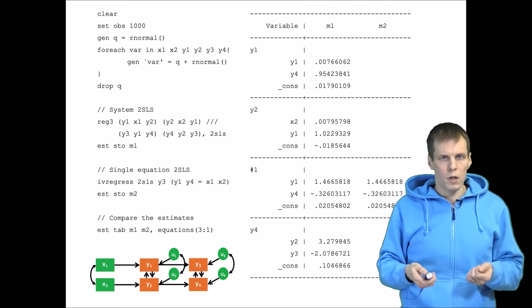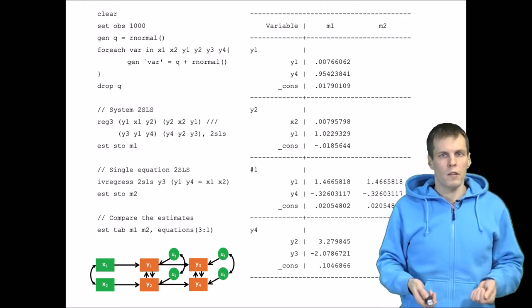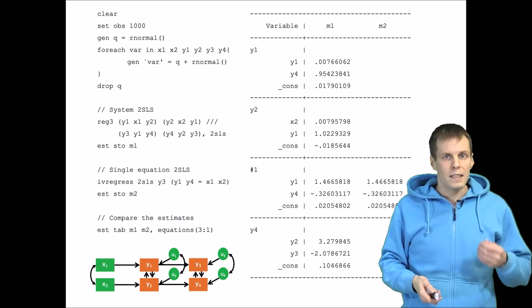Two-stage least squares is one option, a simple option, but there are also other alternatives. One alternative is three-stage least squares.